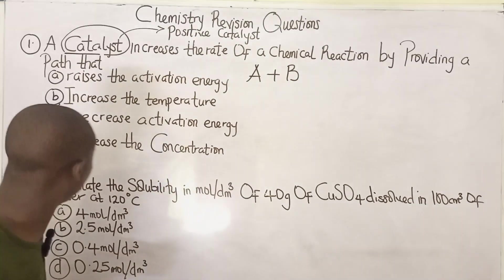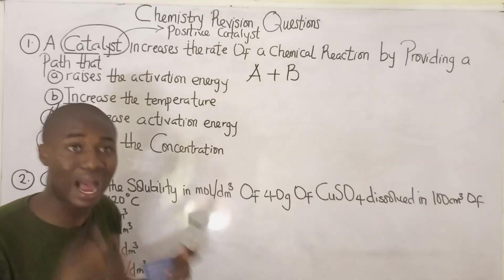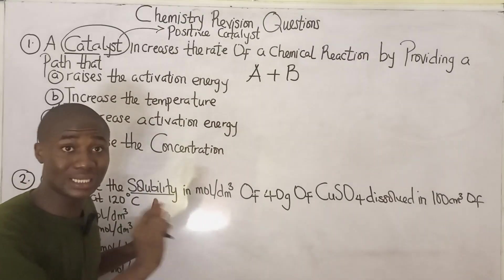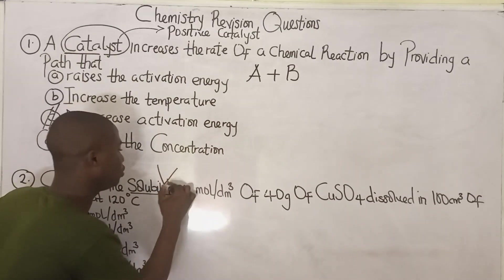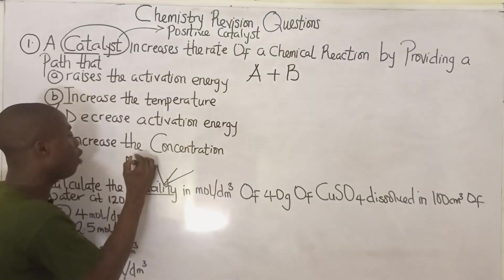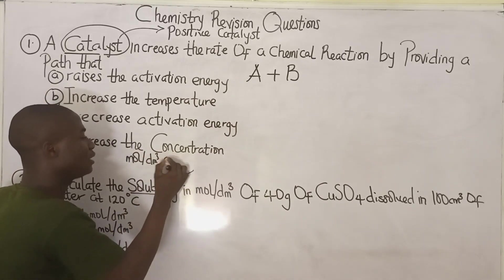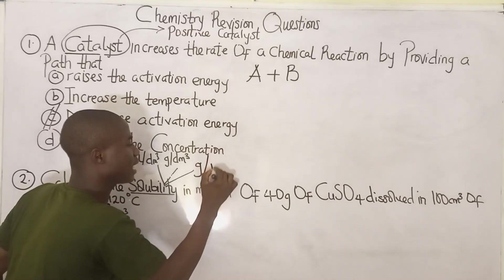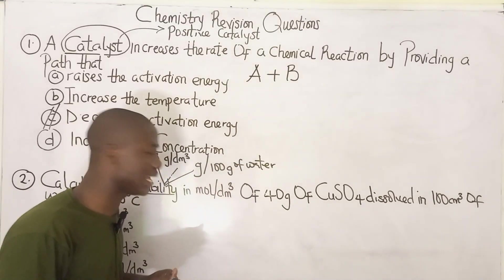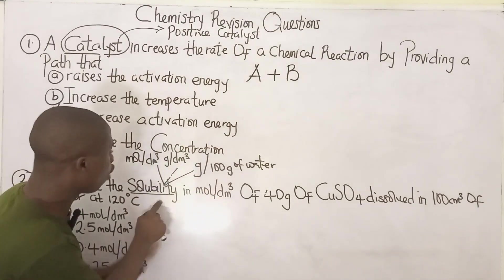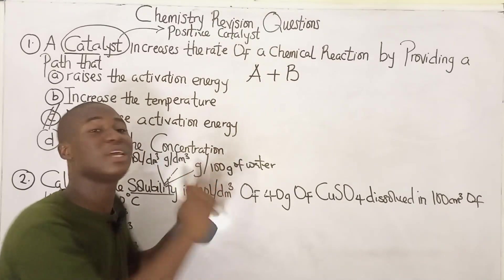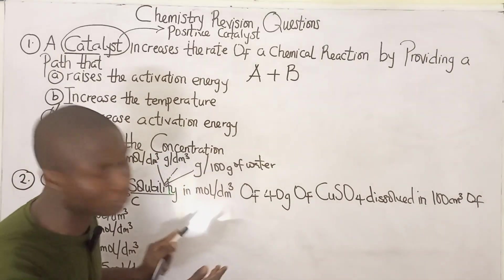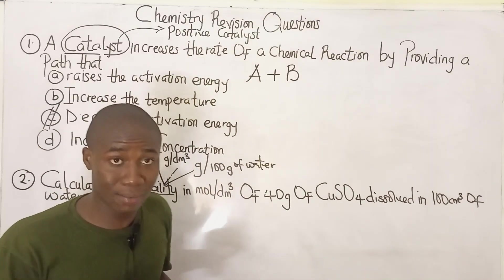Moving to question number two, a calculation question asking us to calculate solubility. Solubility can be expressed in various units: moles per dm³, grams per dm³, and grams per 100 grams of water. There are already video lessons explaining all the concepts on solubility, so check those out to master this aspect — questions from this area commonly appear in JAMB examinations.